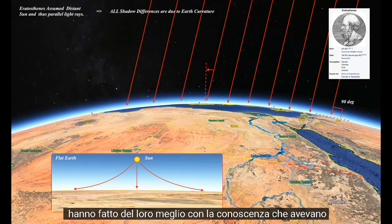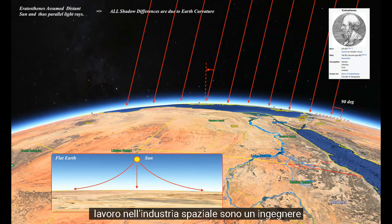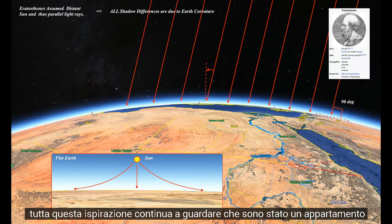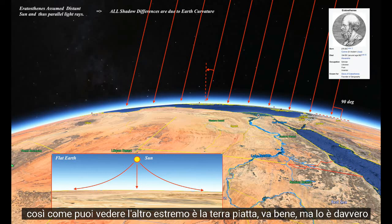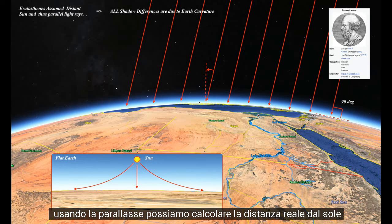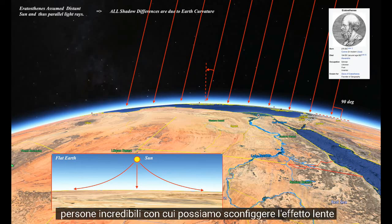We know better now — we have satellites in orbit. I work in the space industry as an engineer. I've been a flat Earth advocate for a long time, working in a vacuum trying to convert some friends. The world is incredible. The other extreme is the flat Earth — but is it really an extreme? Using parallax, we can calculate the true distance to the Sun, and there's obvious lensing going on.